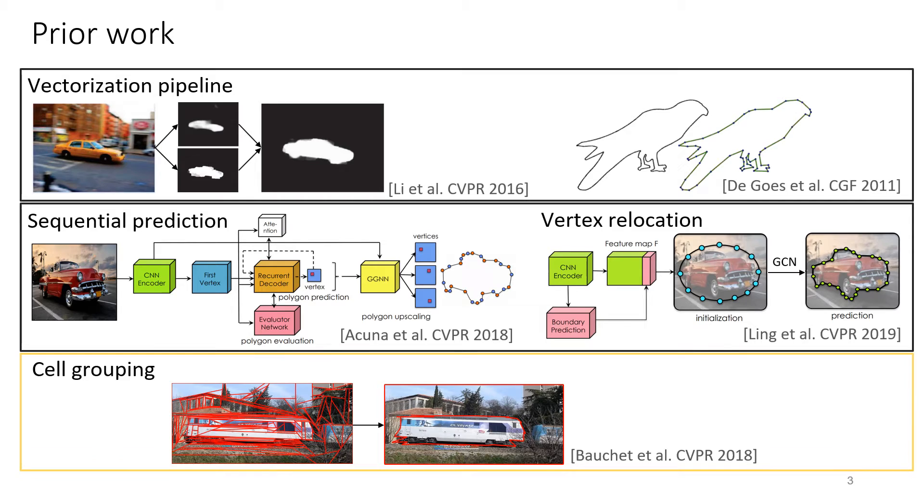Cell grouping approach over-segments an image into polygonal cells, followed by a grouping step. The output relies on the initial partition.